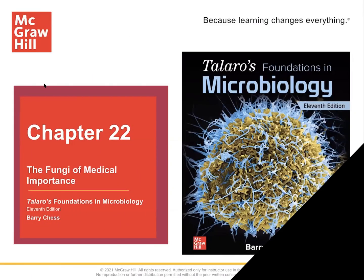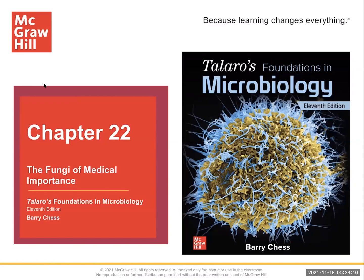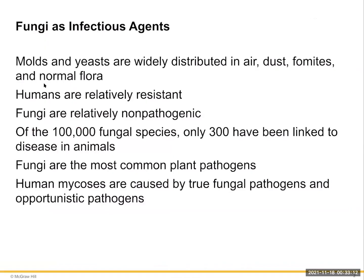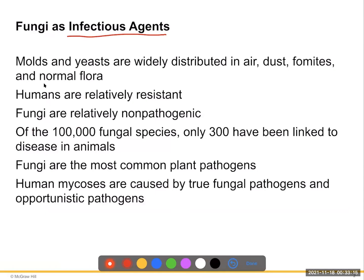Chapter 22 covers the fungi of medical importance. Fungi as infectious agents, like bacterial microbes, are widely distributed in air, dust, fomites, and normal flora. Humans are relatively resistant to fungal infections. Fungi are relatively non-pathogenic for the most part — of approximately 100,000 fungal species, only 300 have been linked to disease in animals, although those 300 can be very deadly.